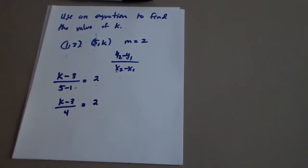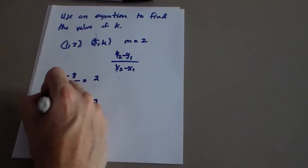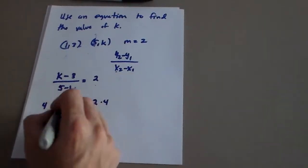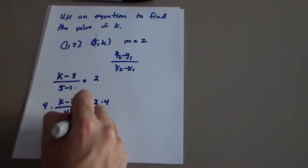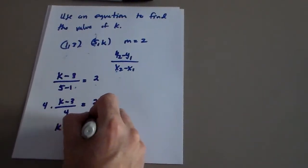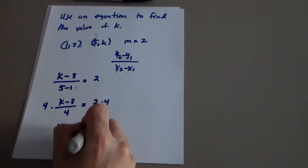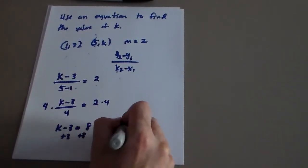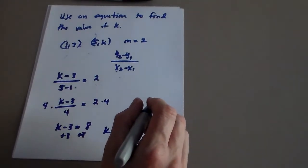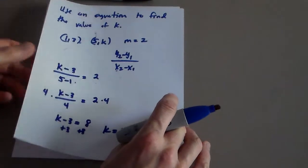I want to get rid of that 4, so I'll multiply by 4 on both sides. That gives me k minus 3 equals 2 times 4, which is 8. Then I add 3 to both sides and I get k equals 11. That's how you do it.